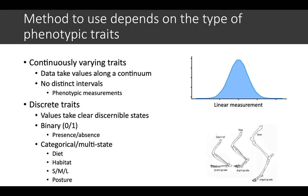Another type of data is discrete traits. These are values that take clear discernible states, for instance a binary data might be zero to one, or presence-absence data, or categorical or multi-state data.